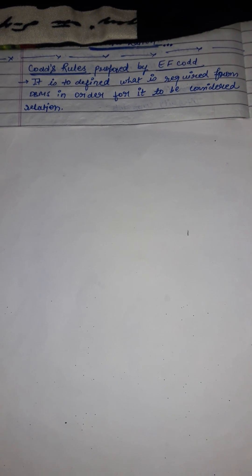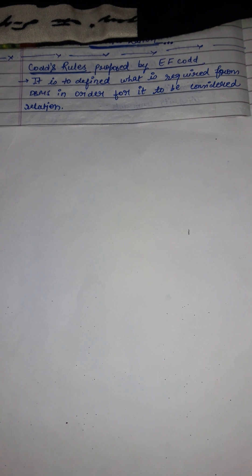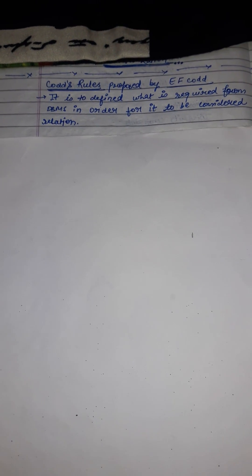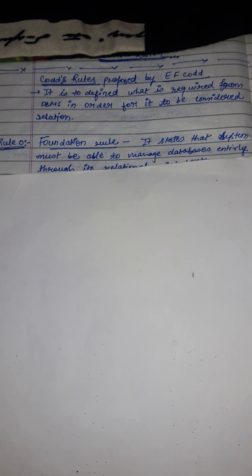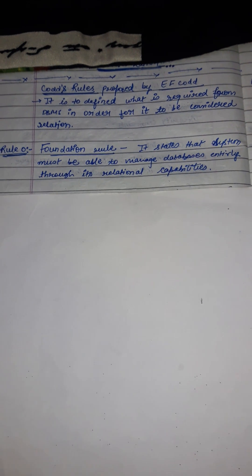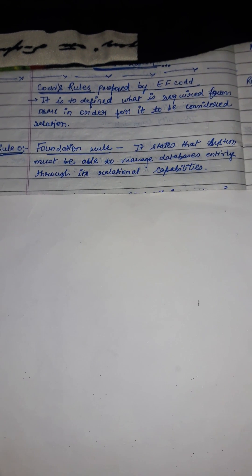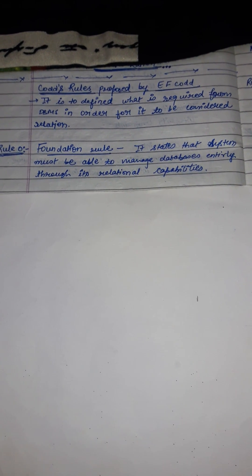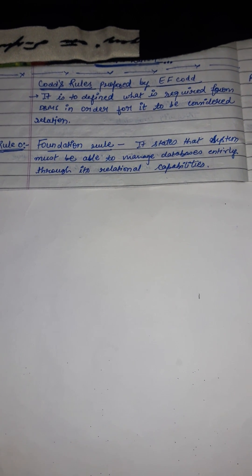So now we'll talk about the rules line by line. Rule 0 is the foundation rule. It states that the system must be able to manage the database entirely through its relational capabilities.